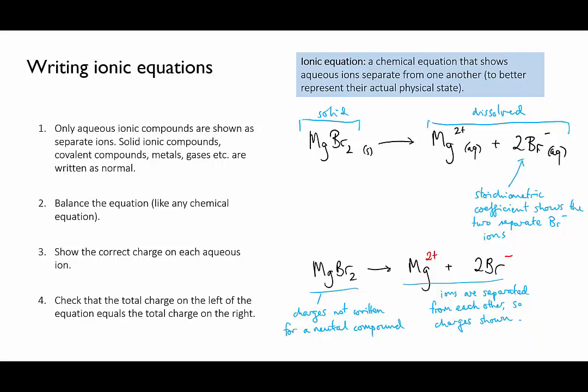Fourth, in the same way that you balance atoms on the left and right of the equation, you should balance the total charge on the left and right of the equation. Remember conservation of mass. We can't lose or gain any whole atoms in a chemical reaction, but neither can we gain or lose any electrons. So whatever the total charge is that we start with on the left, it should remain the same on the right.